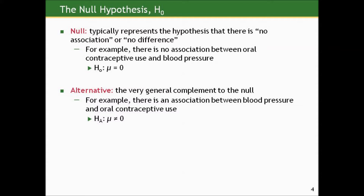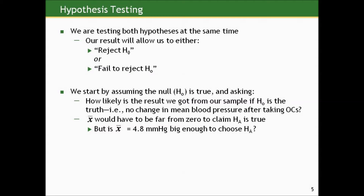The null hypothesis typically represents no association or no difference between the groups being compared. In our example, the null is that there's no association between oral contraceptive use and blood pressure because the true mean difference after and before is zero. The alternative is the very general complement: there is an association because on average the mean change is not zero. What we're going to do is test both hypotheses at the same time and either reject the null and choose the alternative, or fail to reject the null and sit with it.